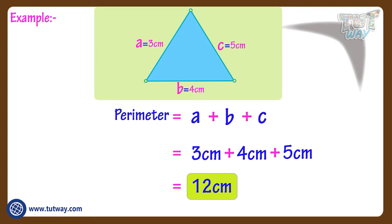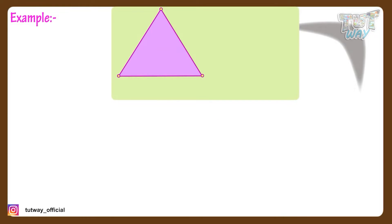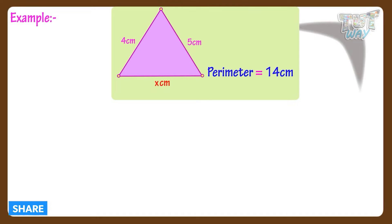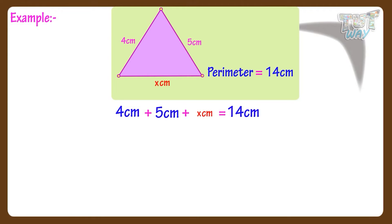Now let's take another example. Here is a triangle. Lengths of two sides of the triangle are given, and we have to calculate the length of its third side. Let the third side be x centimeters. We can write it as a mathematical equation: 4 centimeters plus 5 centimeters plus x equals 14 centimeters.